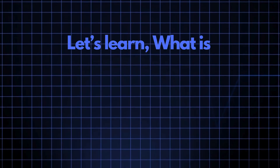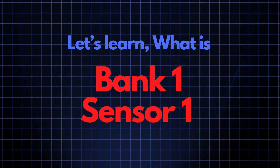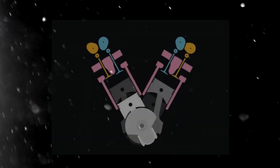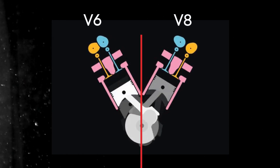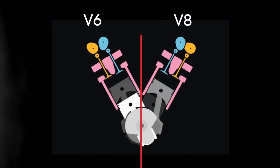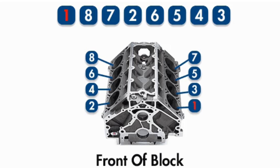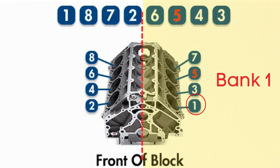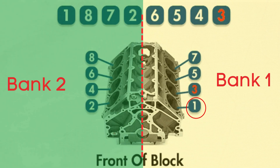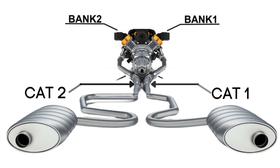Now let's learn what bank one, sensor one means. In engines with multiple cylinder banks like V6 or V8 engines, you'll have two sides or banks of cylinders. Bank one typically refers to the side of the engine where cylinder one is located, and bank two is on the opposite side. Each bank has its own exhaust line, and each exhaust line is equipped with two catalytic converters.